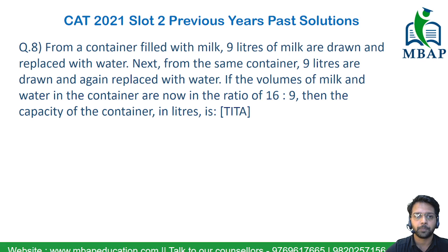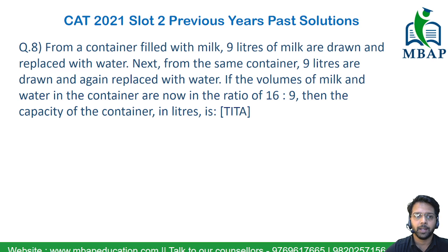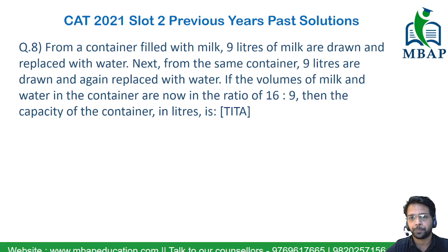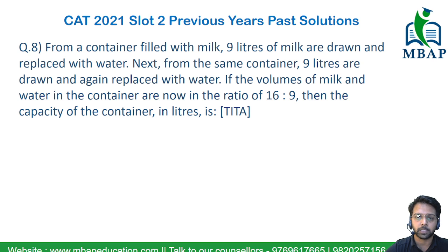Read the question very well. The question says: from a container filled with milk, 9 liters of milk are drawn and replaced with water — so it's a replacement question. From the same container, 9 liters are drawn again and replaced with water again. If the volume of milk and water in the container are now in the ratio of 16:9, then the capacity of the container in liters is equal to what?